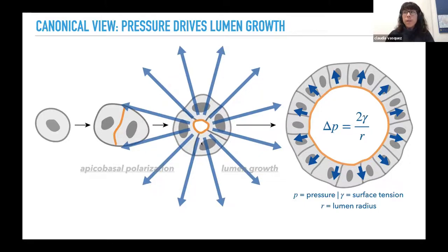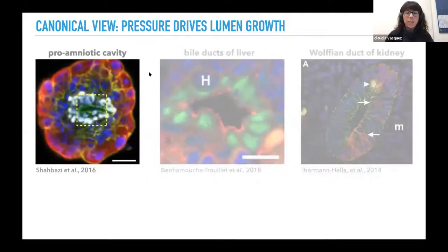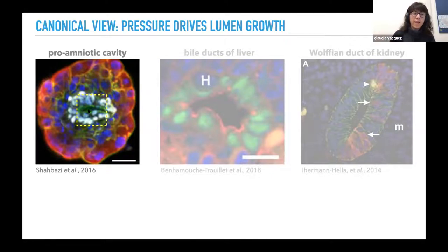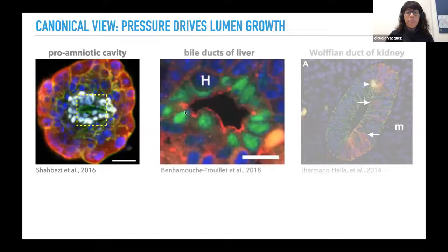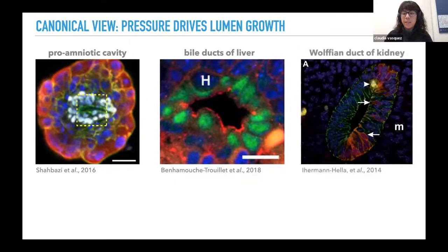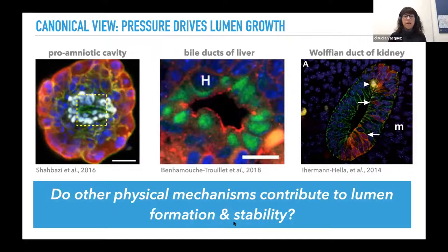I was curious: if pressure alone were stabilizing these luminal shapes, then these shapes would be mostly spherical, kind of like a balloon. However, when I went looking at lumens throughout human biology, I found that lumens were actually quite often not spherical. This is an image of the human pro-amniotic cavity, and you can see it's quite squished. The bile ducts of the liver — you can even see a cell pushing into the lumen — and the Wolffian duct of the kidney are also elongated and squished. So I was interested in understanding if other physical mechanisms contribute to lumen formation and stability, not just pressure.